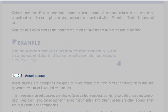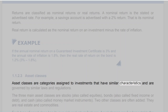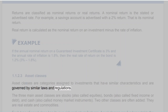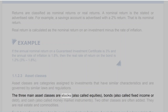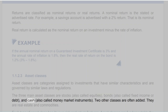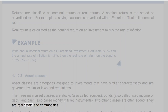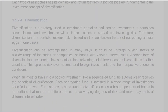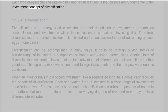Section 1.1.2.3: Asset Classes. Asset classes are categories assigned to investments that have similar characteristics and are governed by similar laws and regulations. The three main asset classes are stocks (also called equities), bonds (also called fixed income or debt), and cash (also called money market instruments). Two other classes often added are real estate and commodities. Each type of asset class has its own risk and return features, and asset classes are fundamental to the investment concept of diversification.